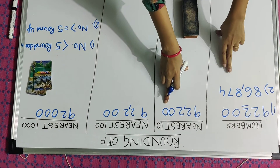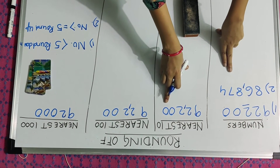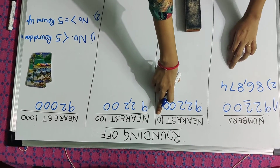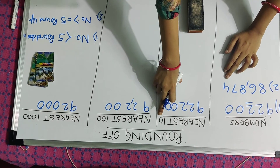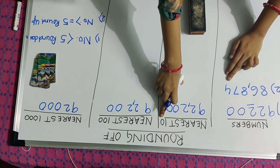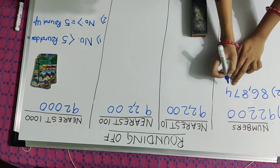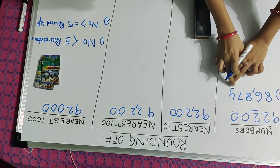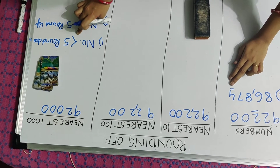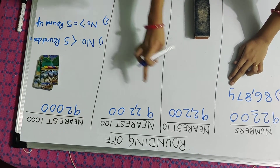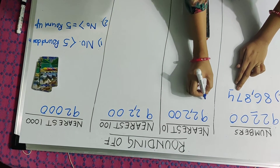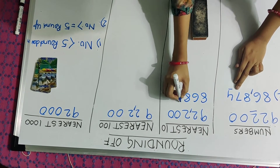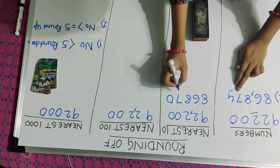My first activity is to round the number 86,874 to its nearest 10. To round this number to its nearest 10, I have to check its 1's place. Since the 1's place is less than 5, there will be no change in its 10's place. So I will put 8, 6, 8, 7, 0.